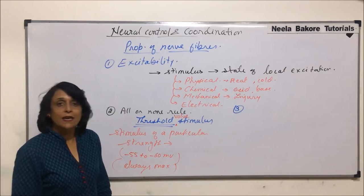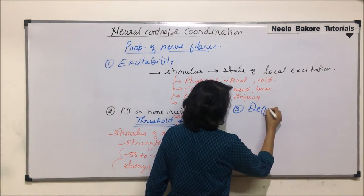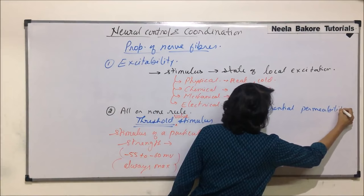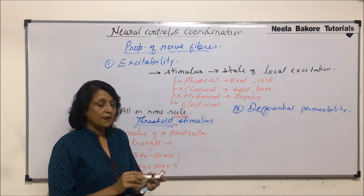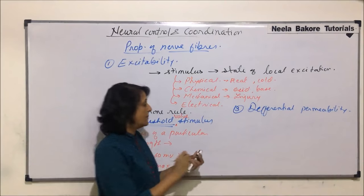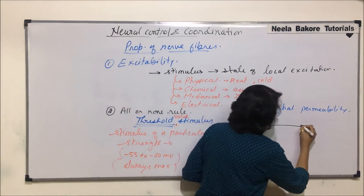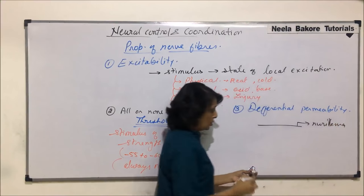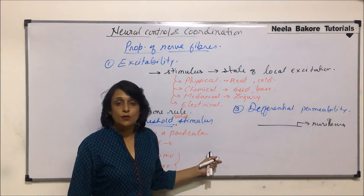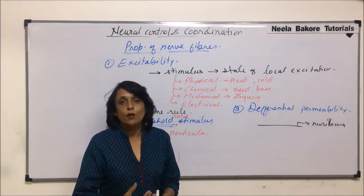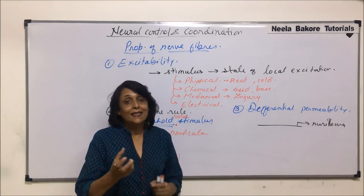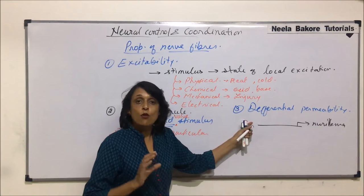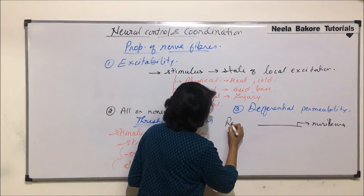The third property is known as differential permeability. The membrane of the nerve fiber, which is known as neurolemma, shows differential permeability at different times. This means the membrane is permeable to certain ions and the permeability differs for different ions.